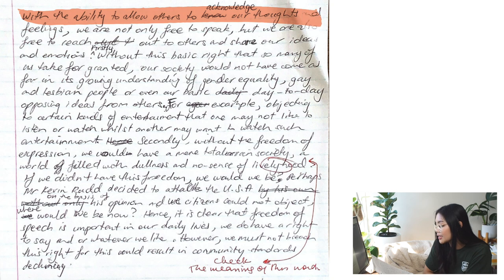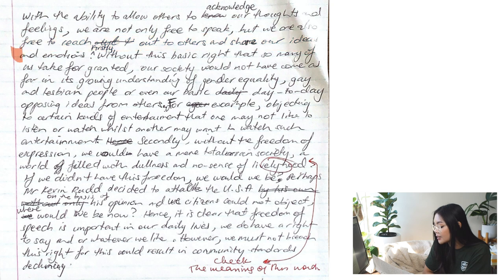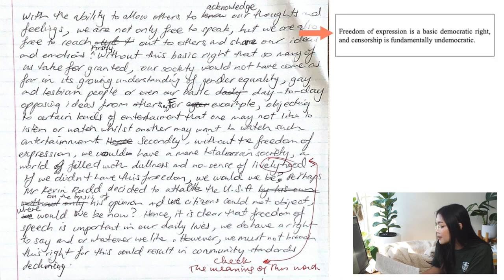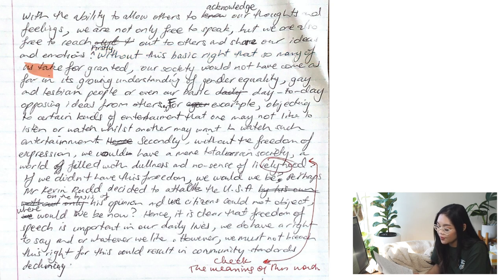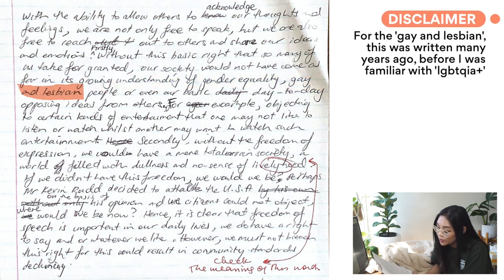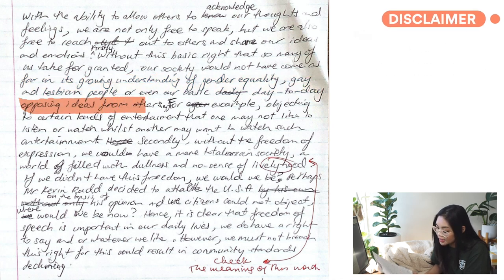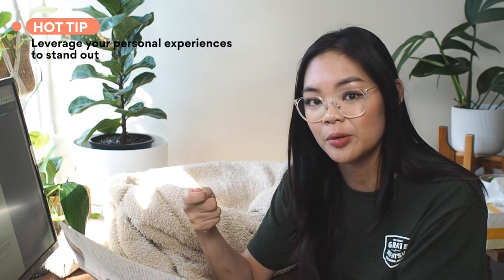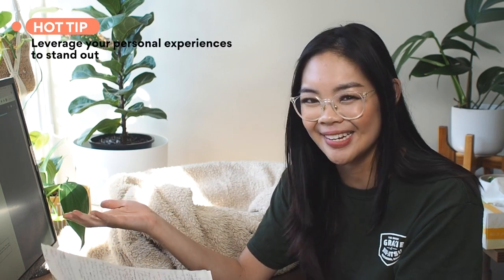This is how my first paragraph unfolded: 'With the ability to allow others to acknowledge our thoughts and feelings, we're not only free to speak, but we're also free to reach out to others and share our ideas and emotions.' If I look at the statements, my first paragraph is based on one of them. I then go on to say: 'Firstly, without this basic right that so many of us take for granted, our society would not have come as far in its growing understanding of gender equality, LGBTQ, or even our basic day-to-day opposing ideas from others.' Here I'm starting to use real-life examples, which you can absolutely do. This is your point of view — use your personal experiences and leverage that in your writing, because that's how you're going to stand out.